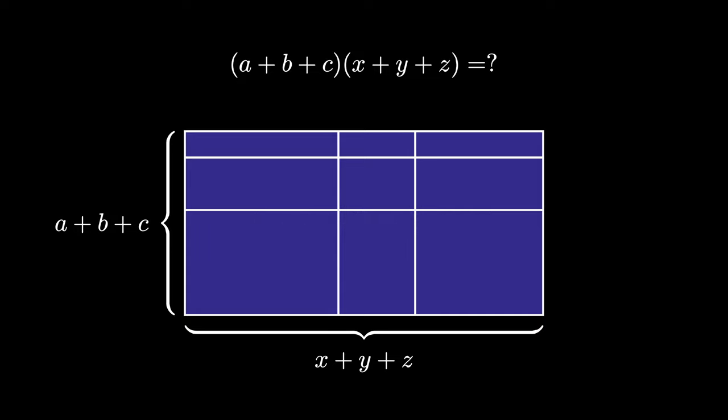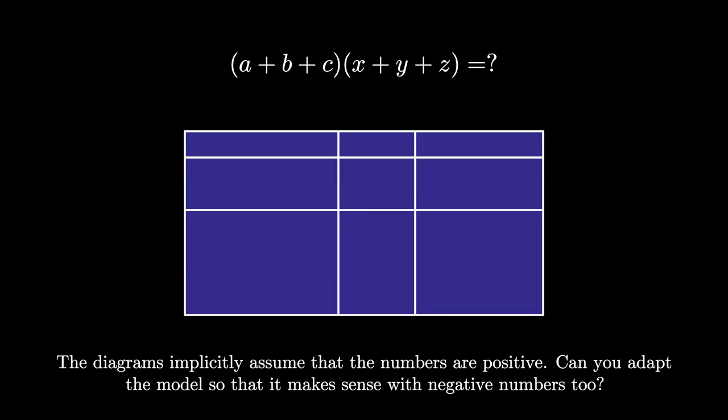One shortcoming of the area model is that it implicitly assumes that all of the numbers involved are positive. Can you adapt the model so that it makes sense with negative numbers as well?